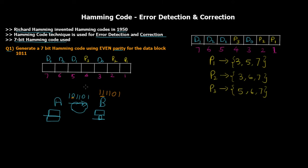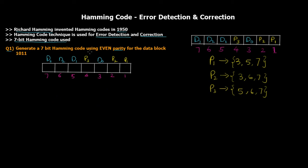Hamming code helps us detect which bit has been changed and also helps in correction. We'll see how this scenario can be prevented and how we can detect and correct errors in binary codes. When generating a Hamming code, there are two terms to understand.